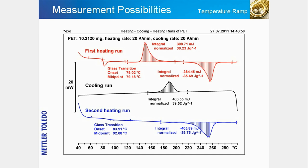Furthermore, there is no exothermic cold crystallization peak in the second heating run. This indicates that the cooling rate was low enough and that there was sufficient time for the material to crystallize. The crystallization peak can be seen in the cooling run shown in black in the diagram. In contrast, the original sample was almost completely amorphous because the cooling process during manufacturing was too fast for crystallization to occur.